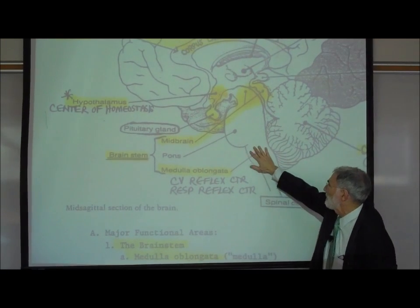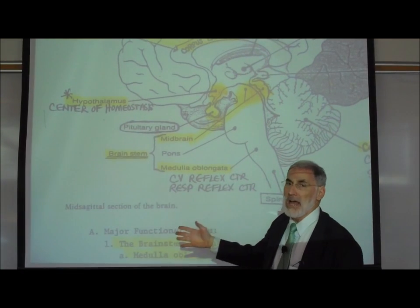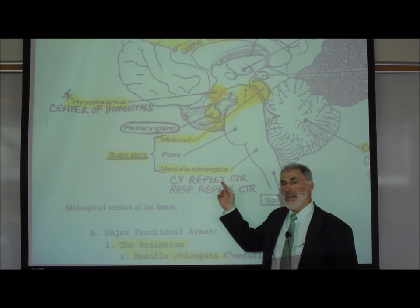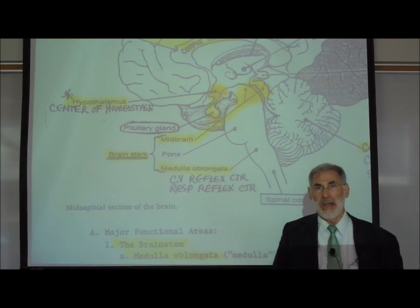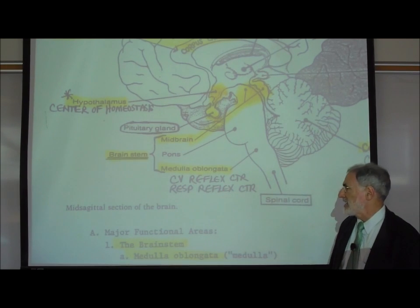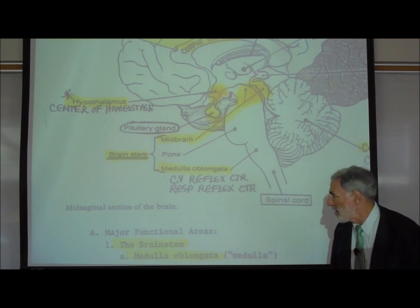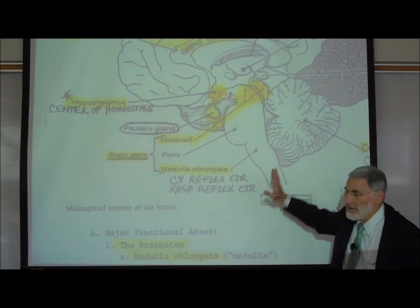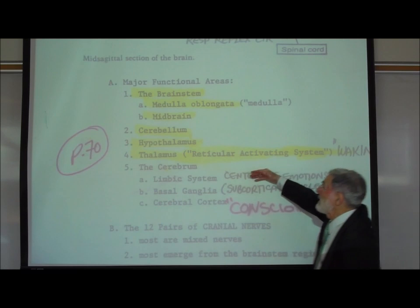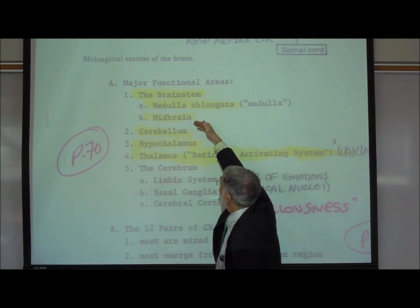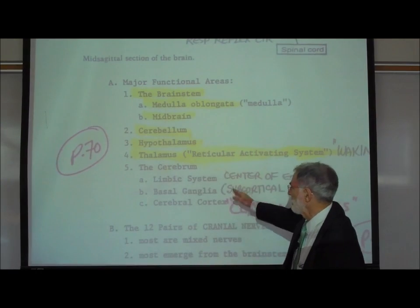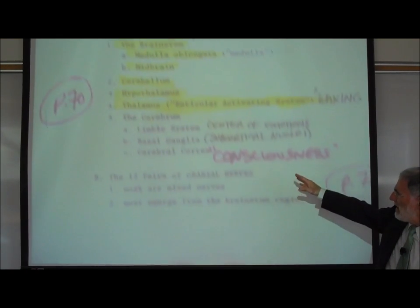The lowest portion of the brain stem is called the medulla or medulla oblongata. This is where there are a number of very important control centers, including a cardiovascular reflex center that regulates our heart rate and blood pressure, as well as the respiratory reflex center that regulates our breathing pattern. So those are some of the more important brain areas. We've mentioned the medulla oblongata and the midbrain under the brain stem, the cerebellum, the hypothalamus, the thalamus, and the cerebrum.